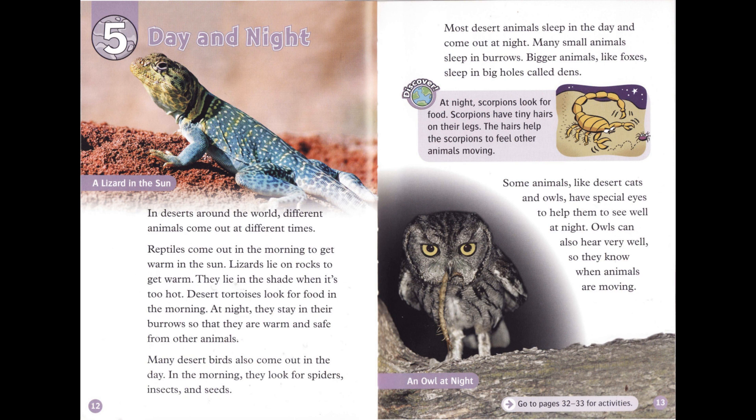Discover: At night, scorpions look for food. Scorpions have tiny hairs on their legs that help them feel other animals moving. Some animals, like desert cats and owls, have special eyes to help them see well at night. Owls can also hear very well, so they know when animals are moving.